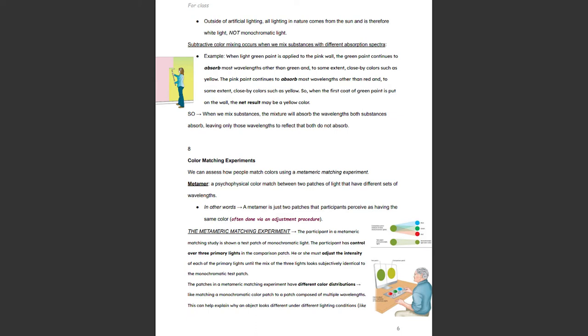Therefore, when the first coat of green paint is put on the wall, the net result may be a yellow color. When we mix substances, the mixture will absorb the wavelengths both substances absorb, leaving only the wavelengths that neither one absorbs left reflecting.